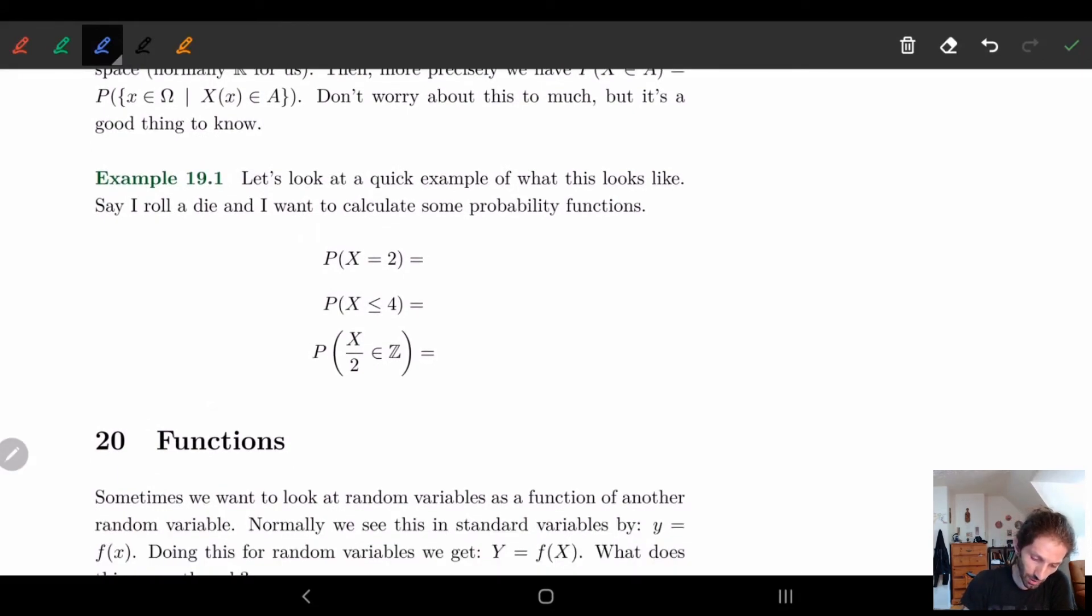We'll go through a quick example and then we'll move on to the next sections. So quick example, I roll a die. I didn't state what kind of die, so this is going to be a fair six-sided. And I want to calculate the probability. What's the probability that X is equal to two? Well, this is just one-sixth, right? I have a one-sixth chance of rolling a two. What's the chance of getting less than or equal to four? Well, this is just four over six, right? Roll a one, two, three, or four.